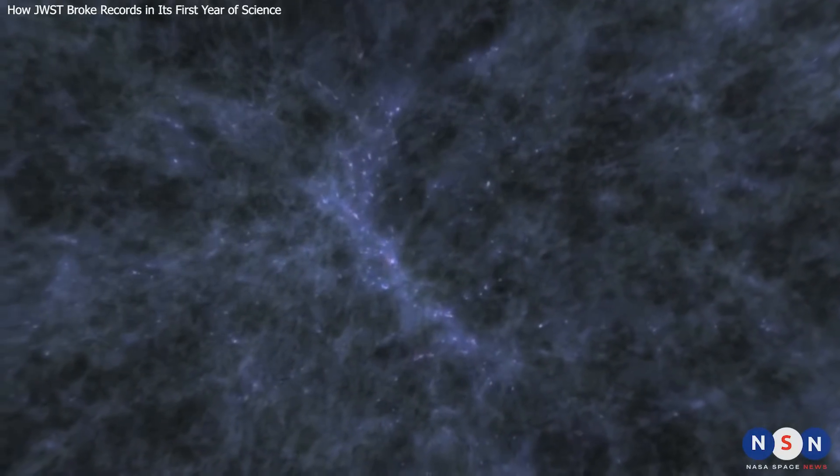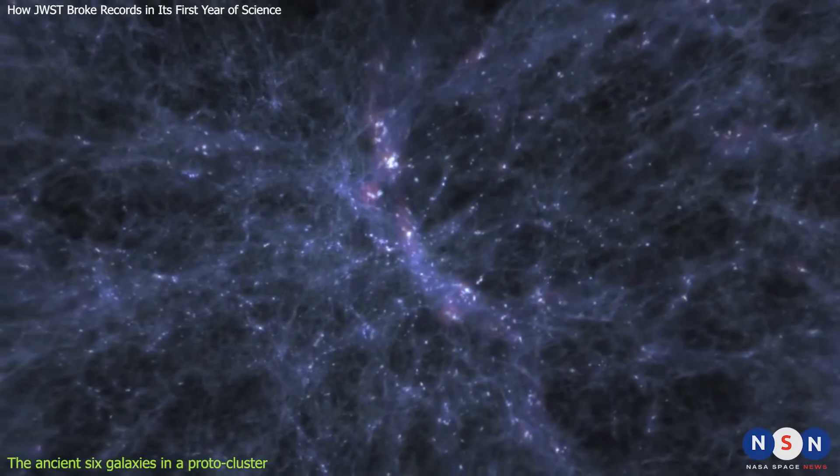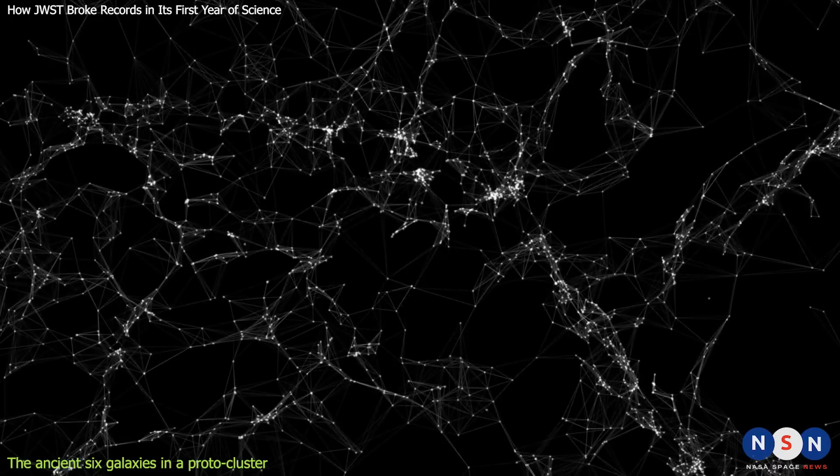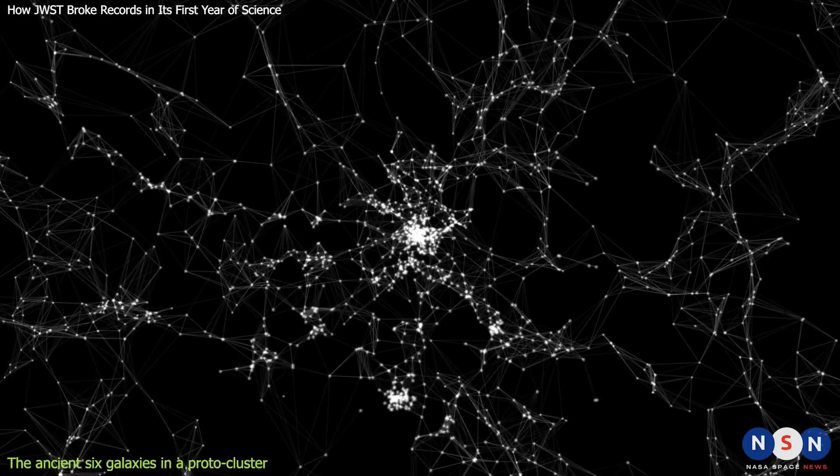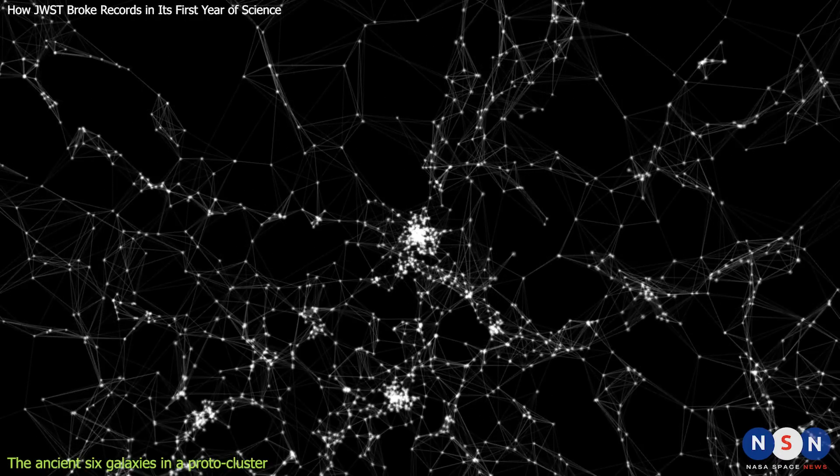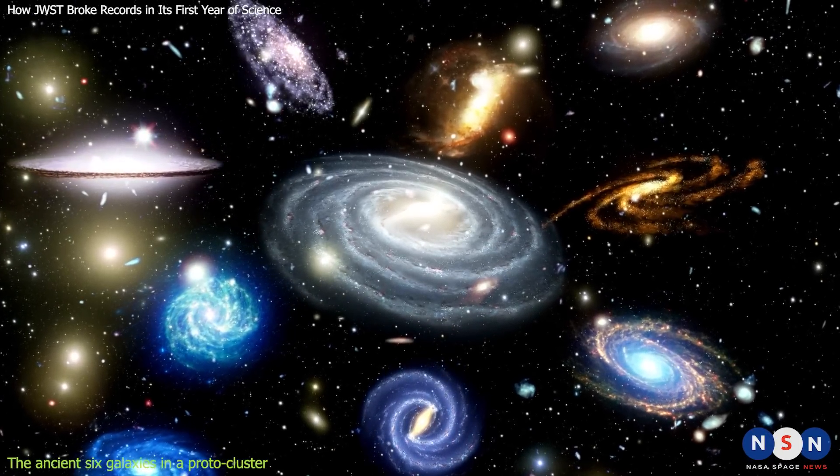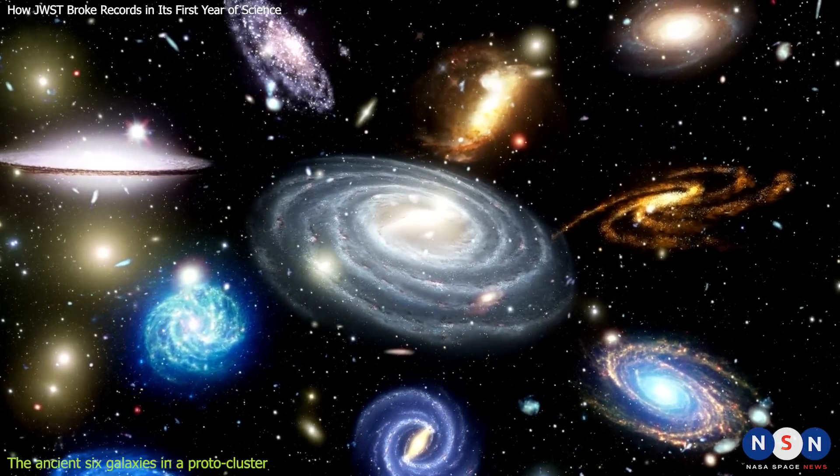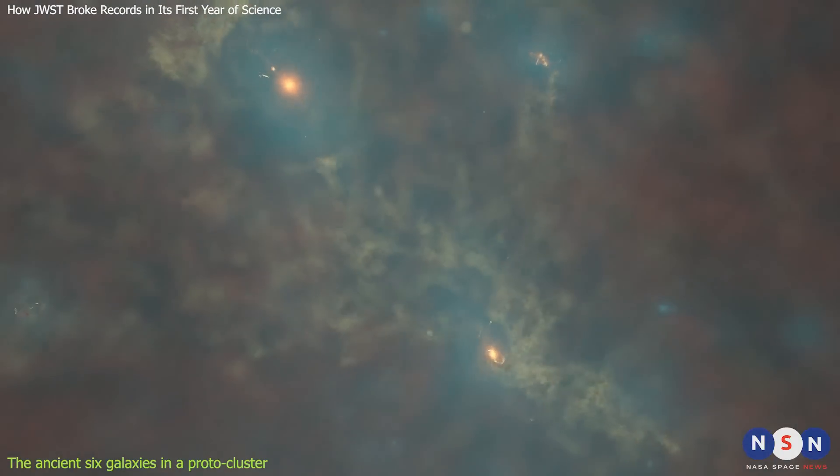A third major goal of James Webb is to study the formation and evolution of ancient galaxies in the universe. Galaxies are collections of billions or trillions of stars, gas, dust, and dark matter, held together by gravity. They come in different shapes and sizes, such as spirals, ellipticals, or irregulars. They also interact with each other through mergers, collisions, or tidal forces.